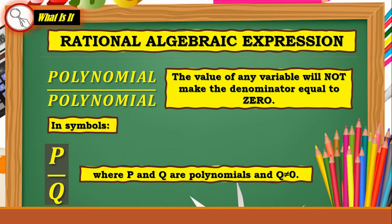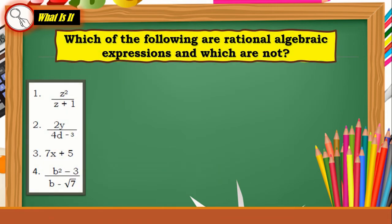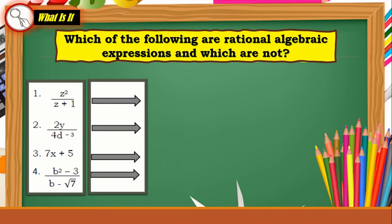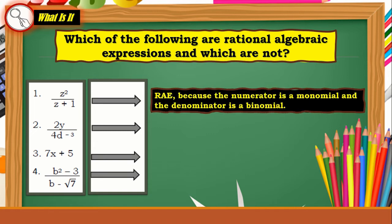Let's give our brains a little workout. Which of the following are rational algebraic expressions and which are not? Number one: z² / (z + 1). It is a rational algebraic expression because the numerator is a monomial — meaning one term — and the denominator is a binomial — meaning two terms. So both the numerator and the denominator are polynomials.